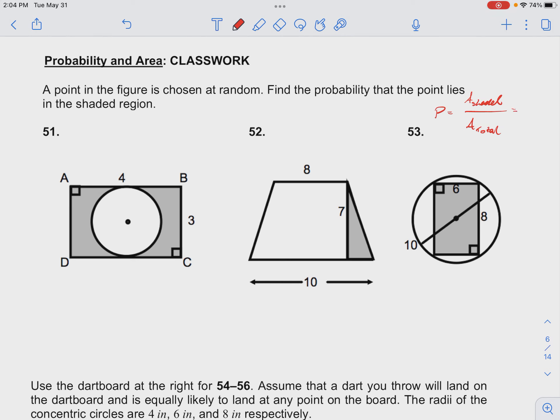We have the area of the shaded region given by the area of this rectangle, so that's length times width of 6 times 8, divided by the total area of the figure, which is the area of the outer circle.